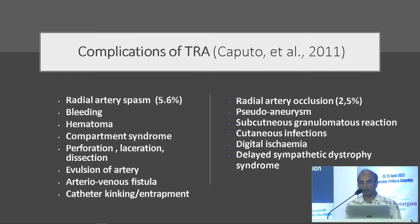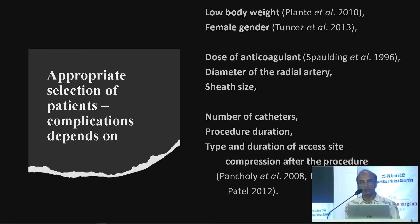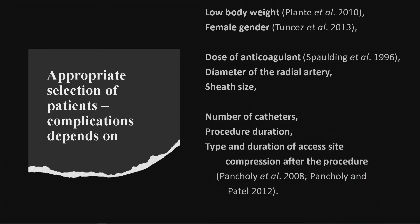The complications include: radial artery occlusion, pseudoaneurysm, subcutaneous granulomatous reaction, cutaneous infection, digital ischemia, and delayed sympathetic dystrophy syndrome. Appropriate patient selection is very important. If we look at the numerous cases, probably most are female — female gender with low body weight has an increased risk of radial complications.